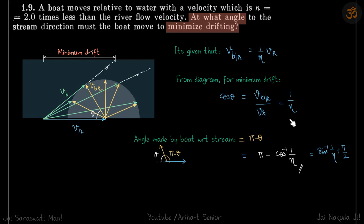We are asked the angle made by boat with respect to stream. That is not θ. θ is this angle. The angle made by boat with respect to stream is π minus θ.